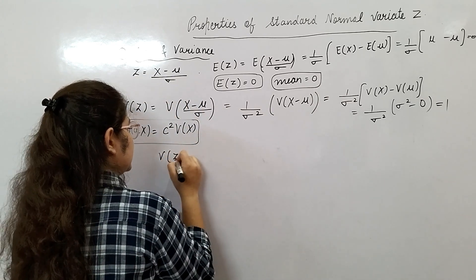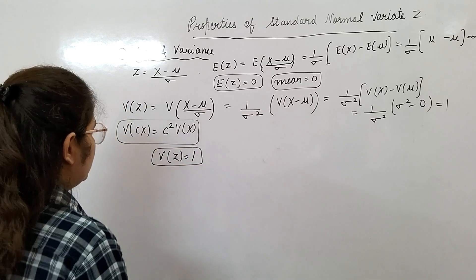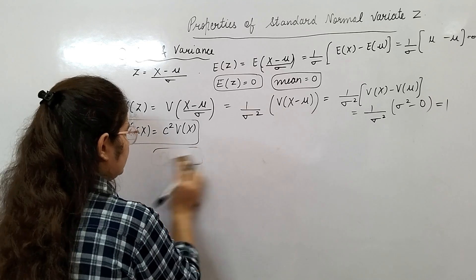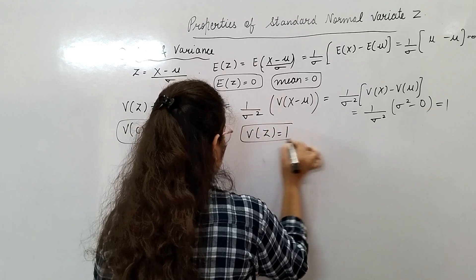From here variance of Z equals 1 you get. In the previous one we can write variance of Z equals 1.